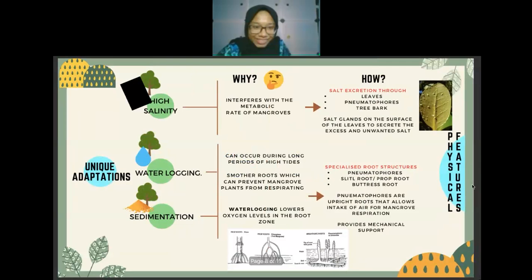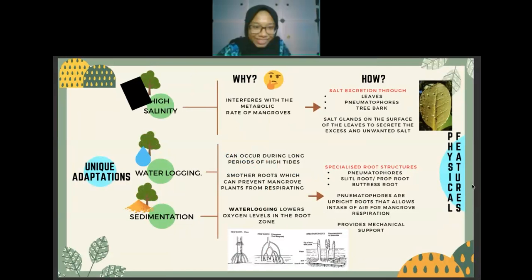Next is unique adaptation and typical features. The first adaptation is salt tolerance. High salt content interferes with the metabolic rate of mangroves. Mangrove plants adapt by excreting salt through leaves — salt is transported through the xylem to the leaves, where specialized salt glands secrete excess salt. Once excreted, leaves fall off and turn into biomass. Salt is also stored in vacuoles with the help of specialized leaf tissue before the leaf dies and drops.